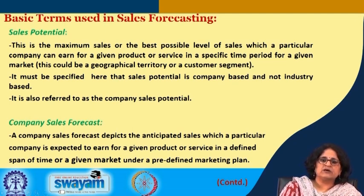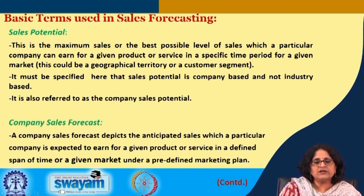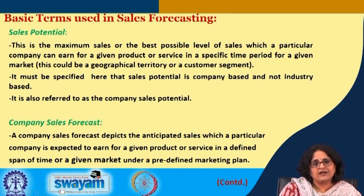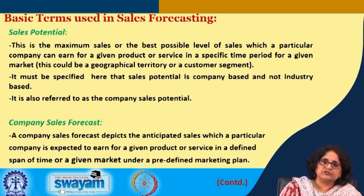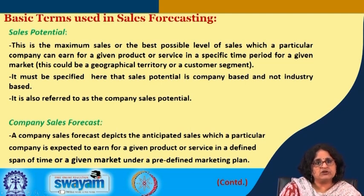The company sales forecast depicts the anticipated sales which a particular company is expected to earn for a given product or service in a defined time span, under a predefined marketing plan or marketing program, and for a given market. So while the sales potential is the maximum a company can earn, what it actually anticipates it will earn constitutes the company sales forecast. The company sales forecast and company sales potential are micro and company-specific, whereas market potential and market forecast are macro and industry-specific.